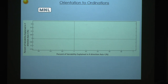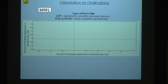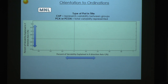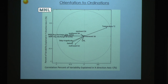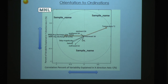In orientation to ordinations: the x-axis, or axis 1, will explain most of the variability, and the second-most variability in multivariate space is explained on the y-axis. Samples that are closer together are more similar than samples that are farther apart. For biplot vectors, longer vectors closer to the x-axis are typically more important for explaining the variations seen in the ordination — for example, temperature and river discharge being the most important variables.